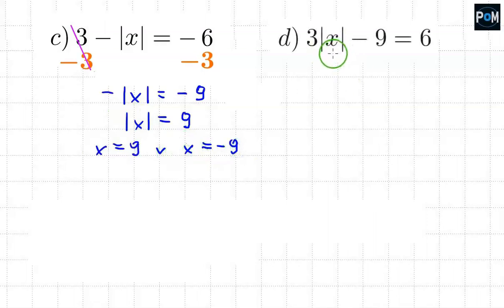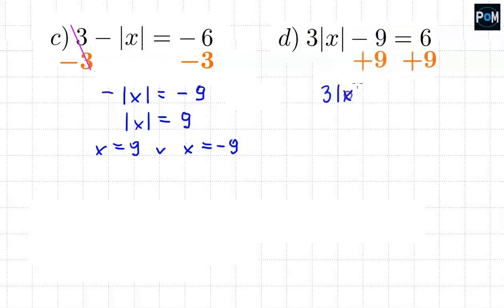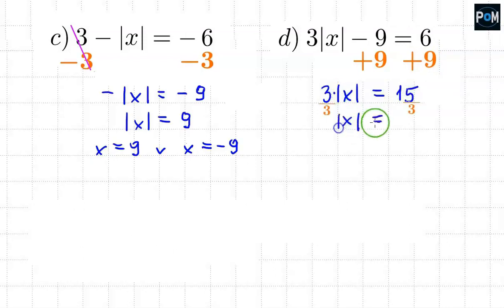In this example, we have a 3 outside the absolute value. We don't want this 3 here, but we don't want this 9 here either. We'll start with the 9 — we add 9 to both sides of the equation. We have number 3, the absolute value is still there, and here we're adding 6 and 9, which gives us 15. Now we divide everything by 3. The absolute value of x equals 15 divided by 3, which is 5. So x can be equal to 5, or x can be equal to negative 5.